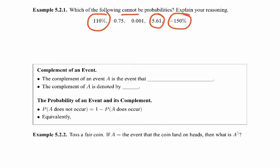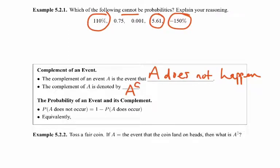The complement of an event A is the event that A does not happen. The notation our textbook uses is A with a little C in the exponent slot. The probability of an event not occurring — probability that A does not occur — is equal to 1 minus the probability that A does occur. So the probability of the complement of A equals 1 minus the probability of A.